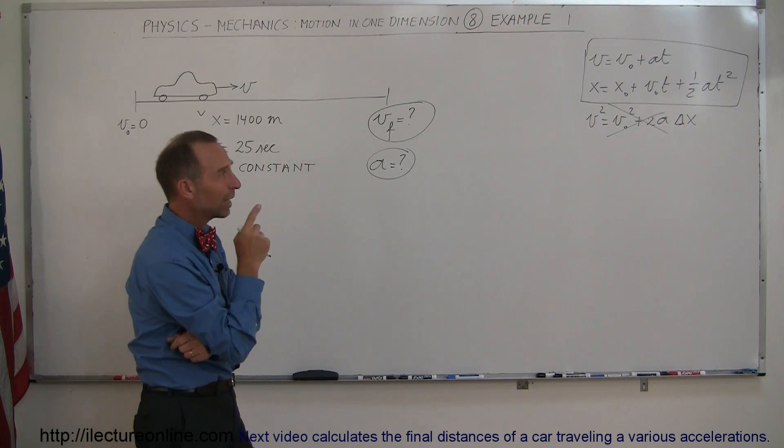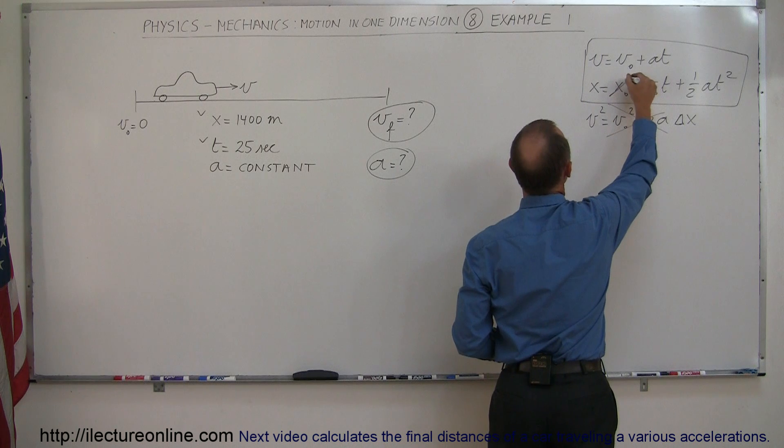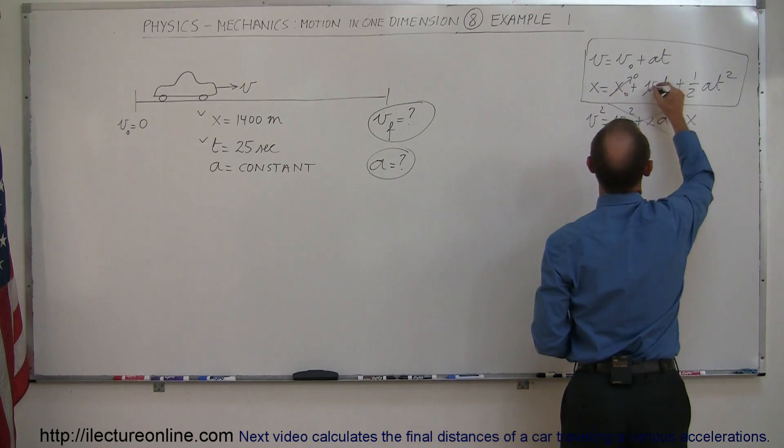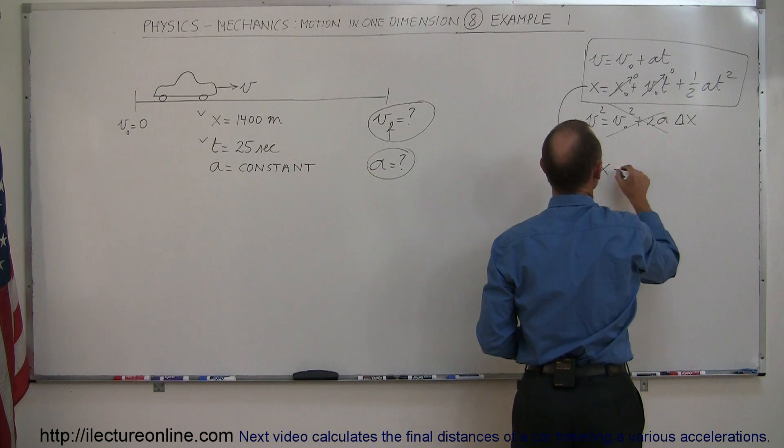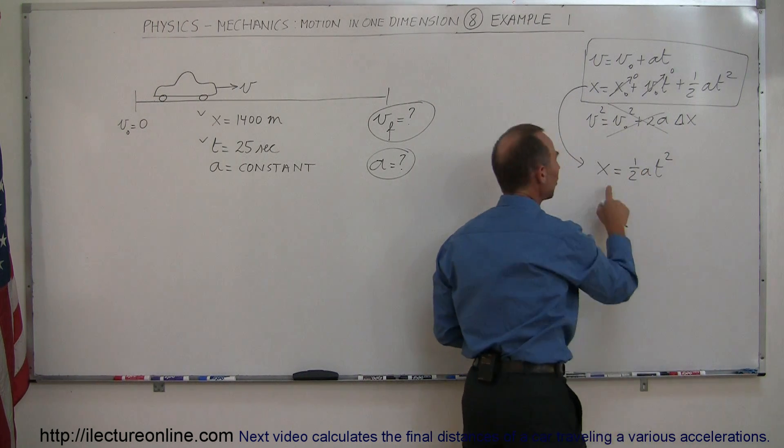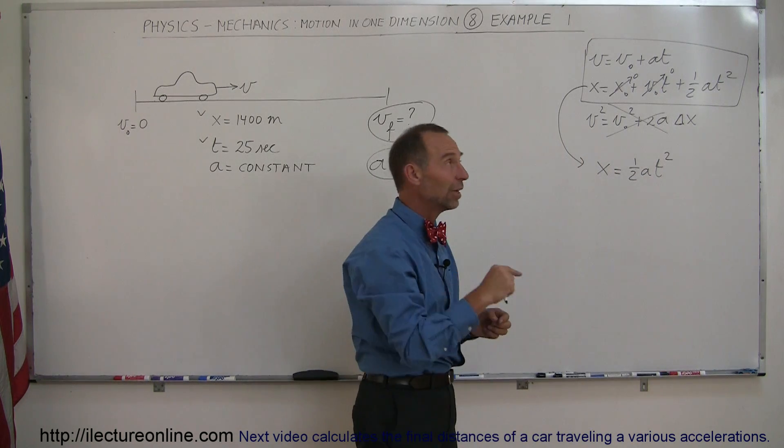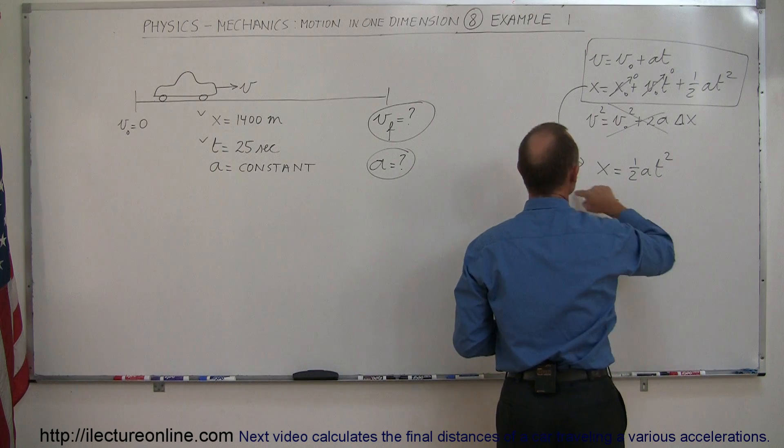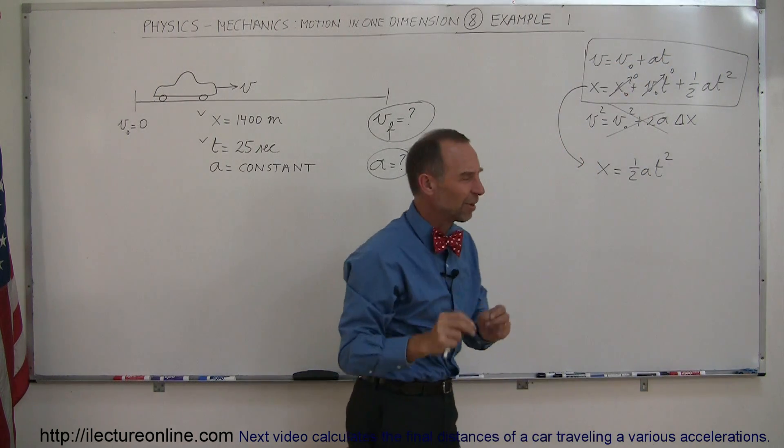So what I can do is since X is known, the initial distance is zero, the initial velocity is zero, I can take this equation and write it as X equals one-half AT squared. Since I know X and since I know T, I can use that equation to solve for the acceleration, then I can plug that acceleration into the second equation to find the final velocity, so that's my strategy.